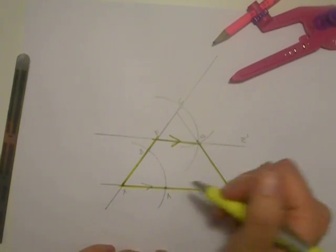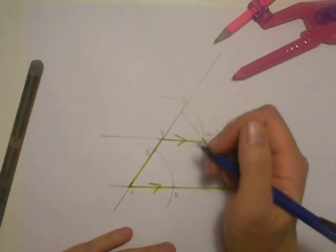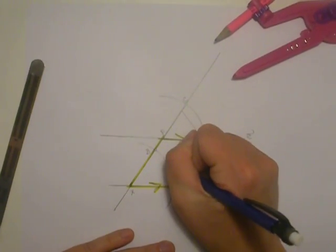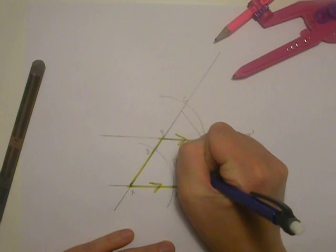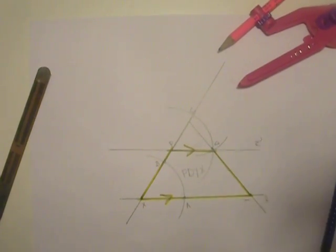And PD and XY are parallel. So we have trapezoid PDYX. And there you go. That's how you make a trapezoid using your compass and straight edge.